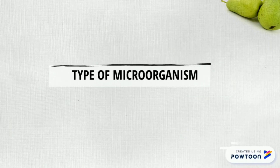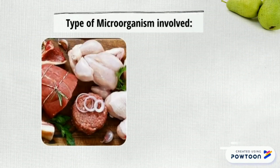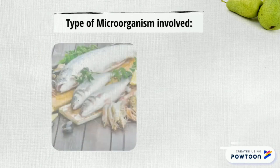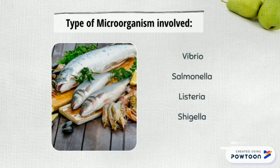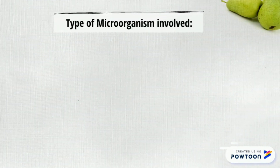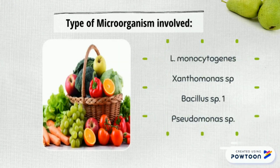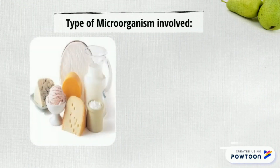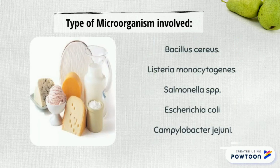Let's see the types of microorganisms that involve food spoilage. Microorganisms that involve poultry are Salmonella and Campylobacter. Microorganisms that involve fish are Vibrio, Salmonella, Listeria, and Shigella. Microorganisms that involve vegetables are Listeria monocytogenes, Xanthomonas species, Bacillus species, and Pseudomonas species. Microorganisms involved in milk and milk products are Bacillus cereus, Listeria monocytogenes, Salmonella species, E. coli, and Campylobacter jejuni.